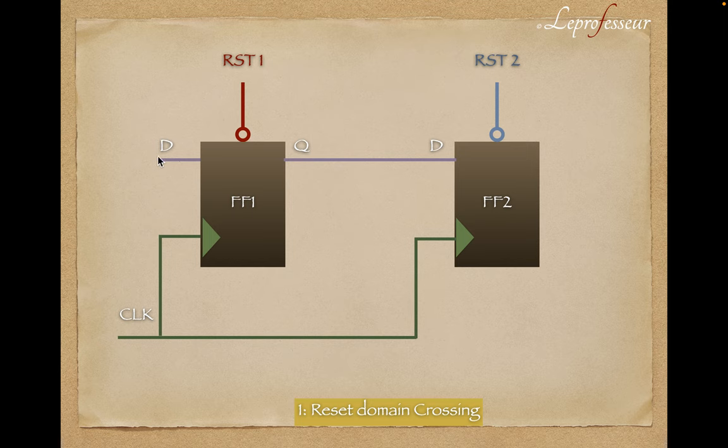This becomes a valid reset domain crossing where the data wire or your control wire is passing from one flop to another flop and both the flops are getting different resets. Very similar to the clock domain crossing problem which we discussed in previous lectures. If you have not watched those lectures, I would highly recommend you to watch the clock domain crossing lecture.